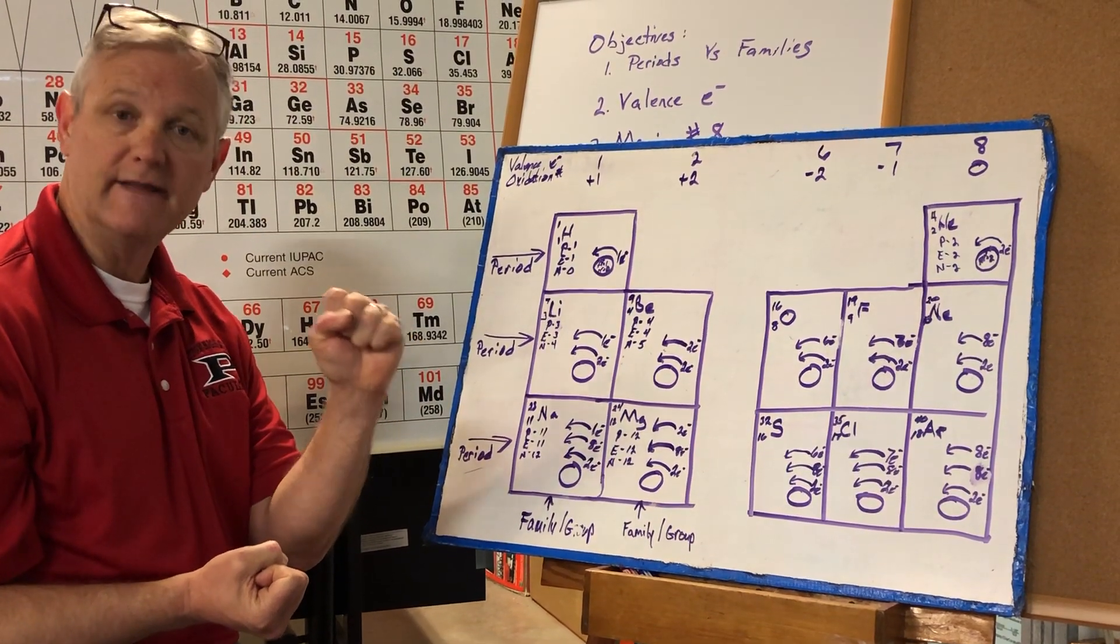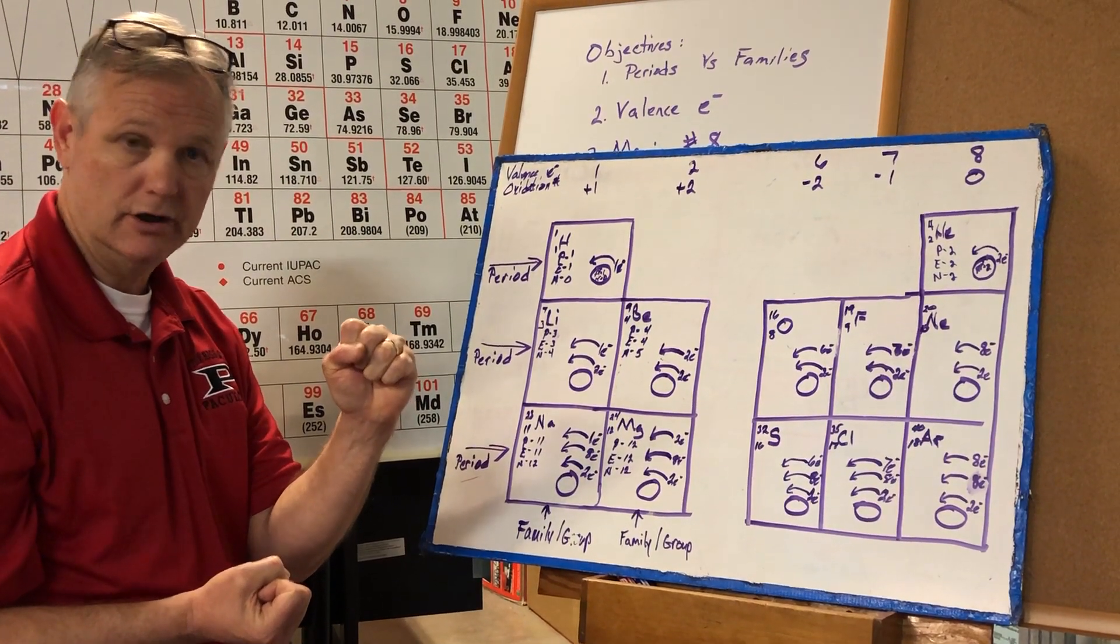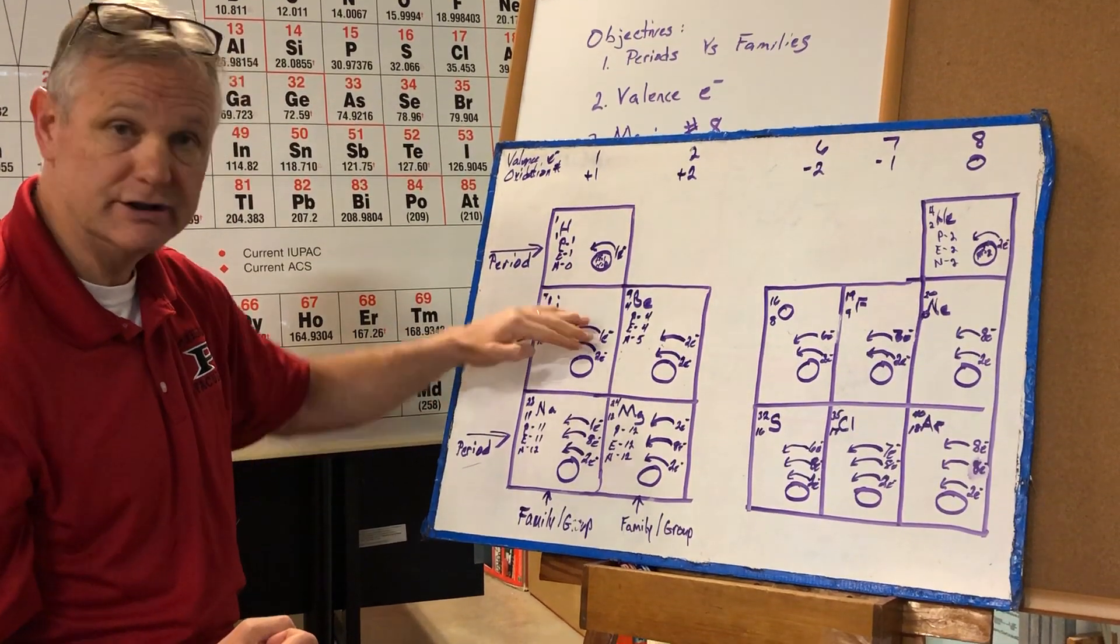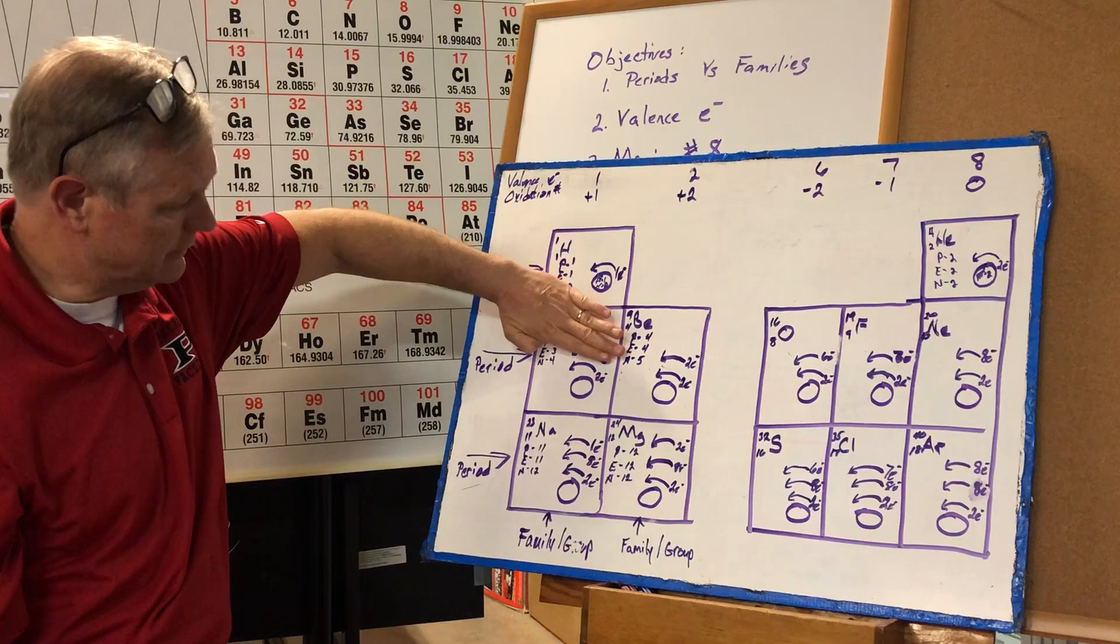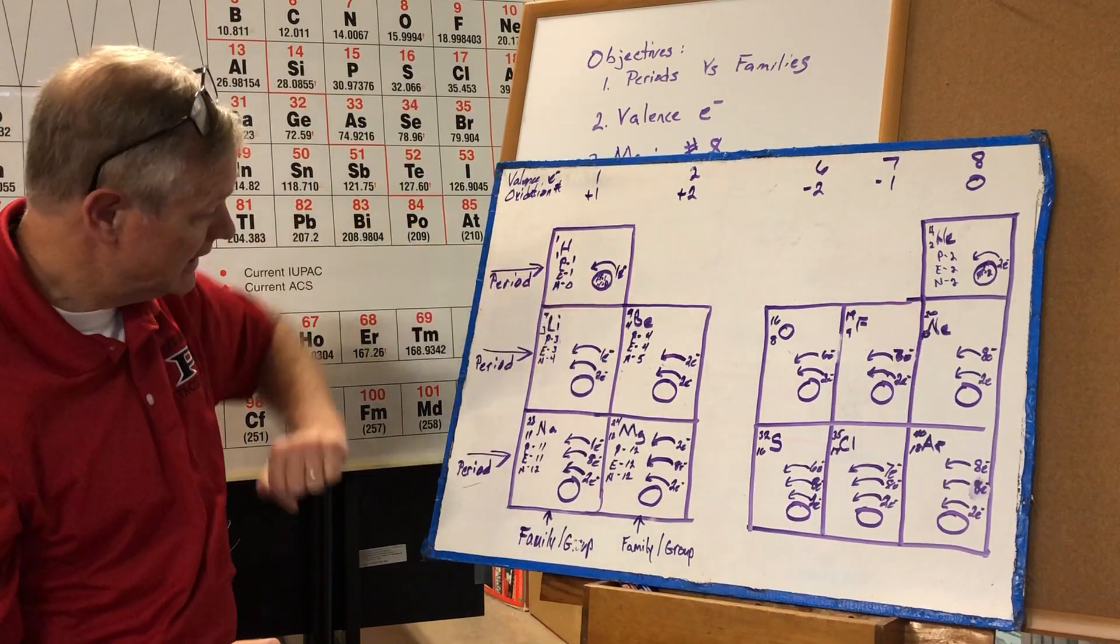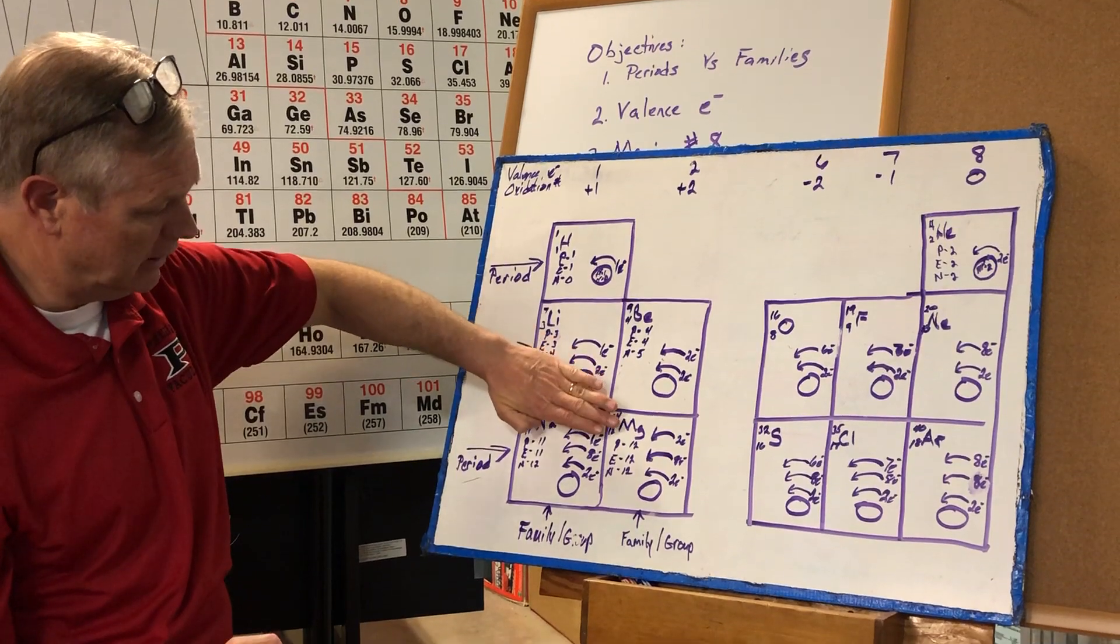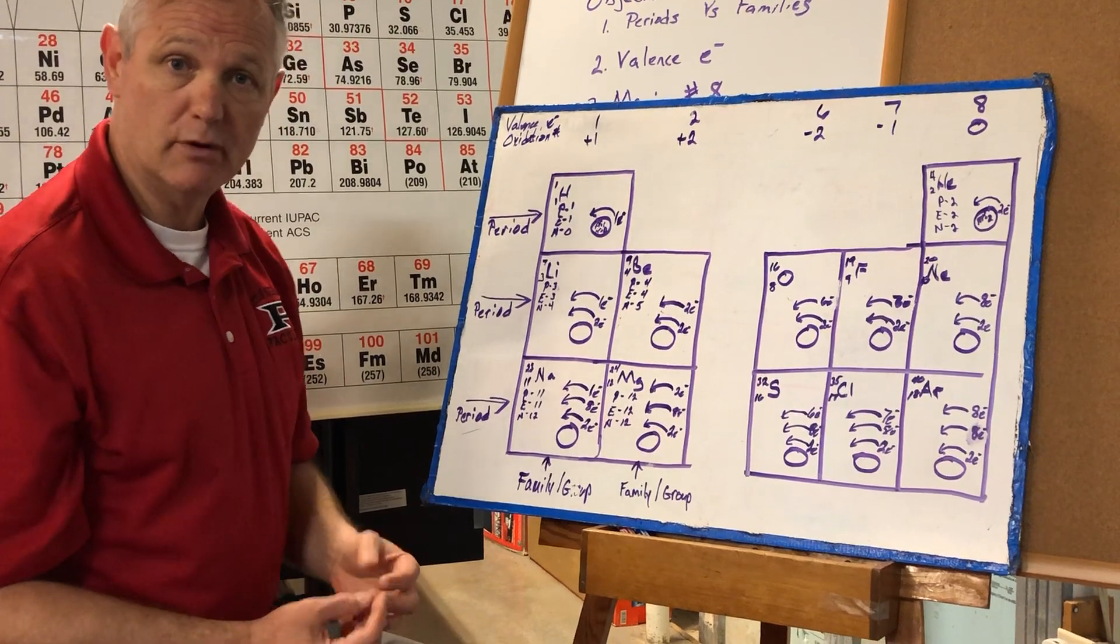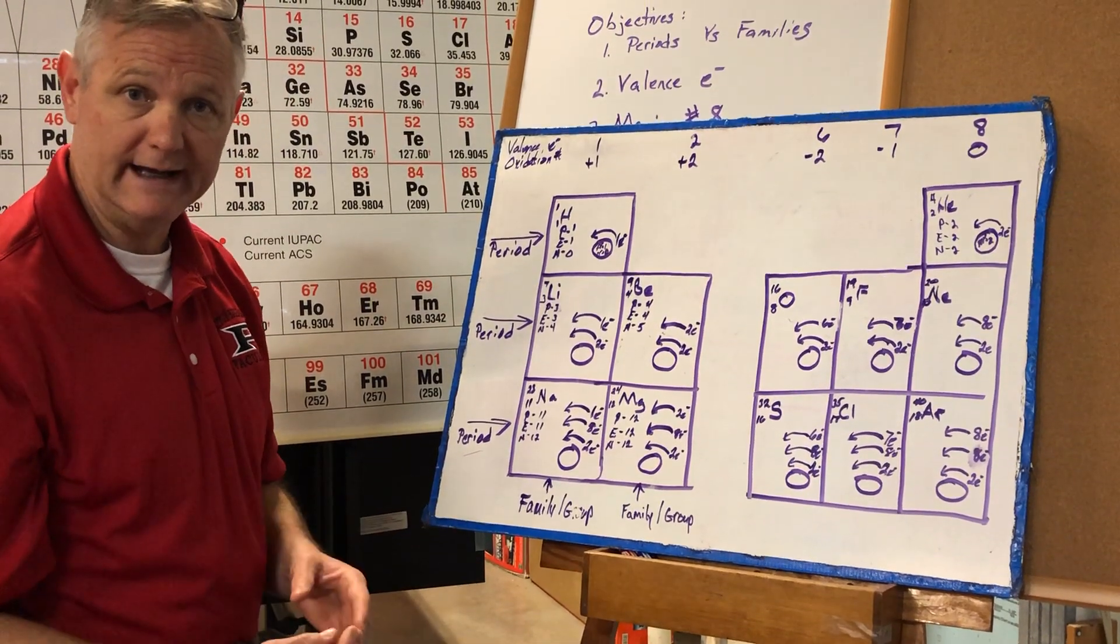If it loses that one electron, you can now see it has eight valence electrons. The same thing would happen with sodium. If it lost the one, it would have eight valence electrons. So you can either reach the magic number of eight by losing or gaining.